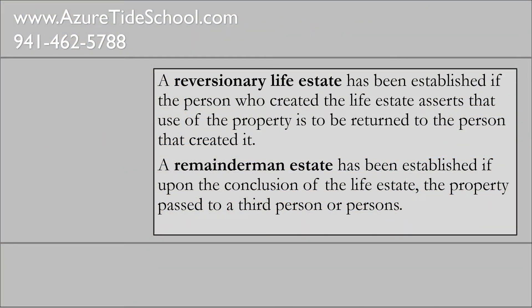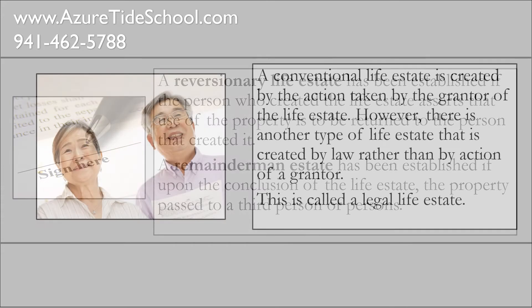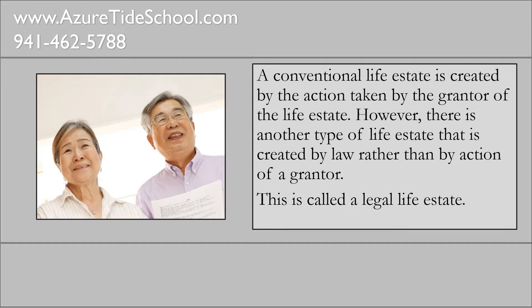A reversionary life estate has been established if the person who created the life estate asserts that use of the property is to be returned to the person that created it. A remainder man estate has been established if, upon the conclusion of the life estate, the property passes to a third person or persons. A conventional life estate is created by action of the grantor; however, there is another type of life estate created by law rather than by action of a grantor — this is called a legal life estate.